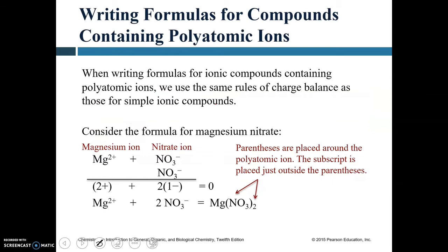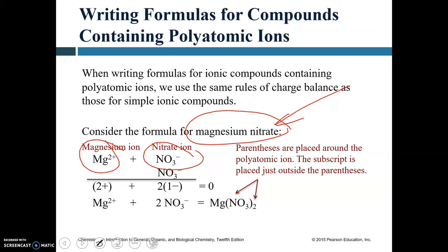Writing formulas for compounds with polyatomic ions uses the same charge balance rules as simple ionic compounds — treat the polyatomic ion as a single unit. For magnesium nitrate: Mg²⁺ has two positive charges; nitrate (NO₃⁻) has one negative charge as a whole. To balance two positive charges with nitrate's -1, you need two nitrate ions. The formula is Mg(NO₃)₂.